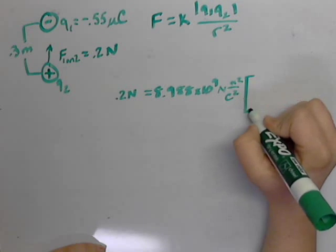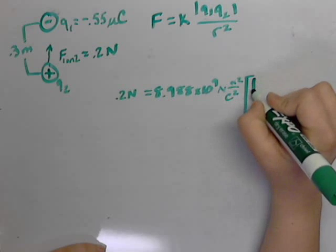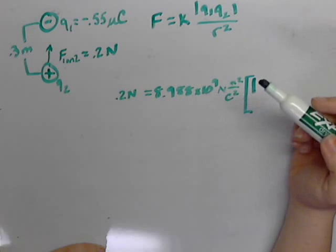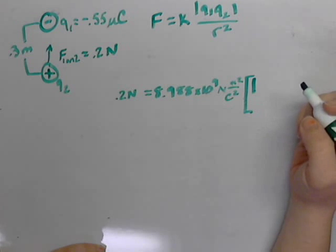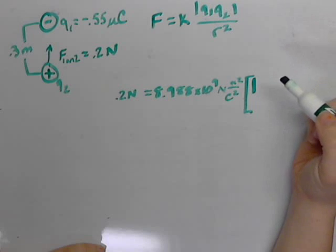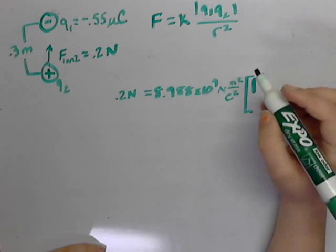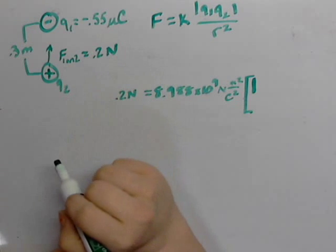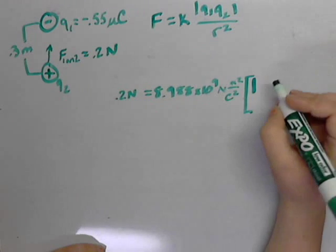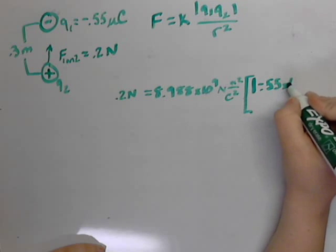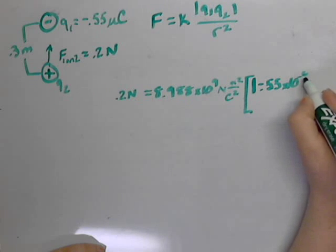We're going to multiply this by Q1 absolute values. Don't forget those absolute values. Force is always a positive number. So we have the absolute value of Q1, here we have negative 0.55 microcoulombs. We want SI units, so we need to get rid of that micro, so we multiply negative 0.55 times 10 to the negative 6 to get coulombs.